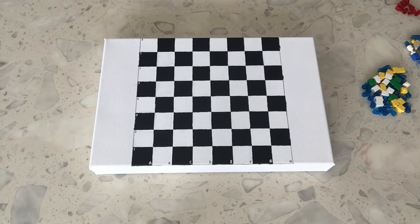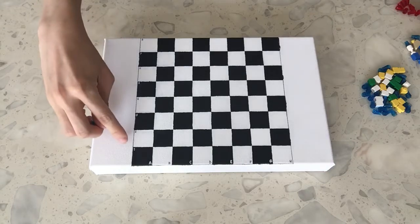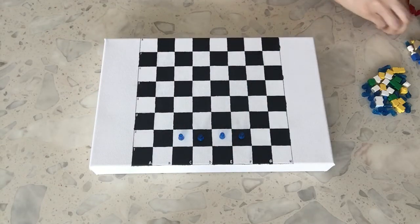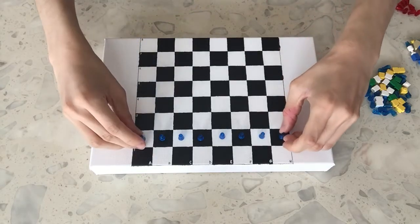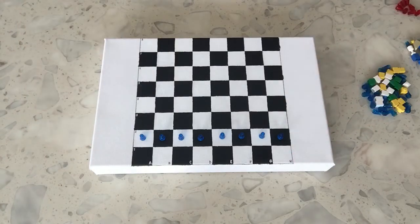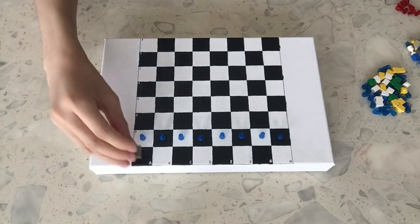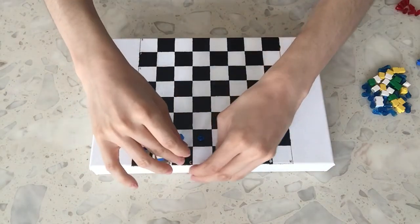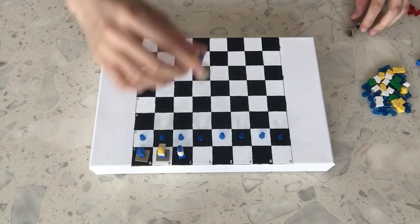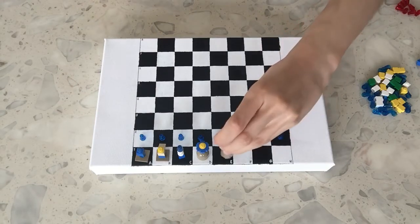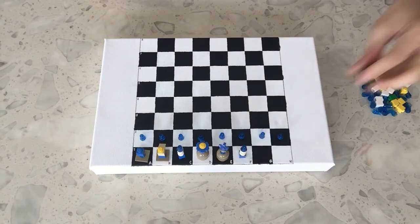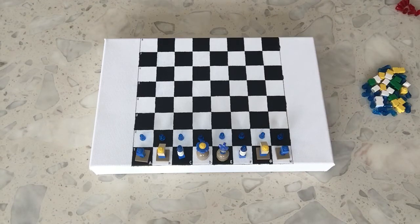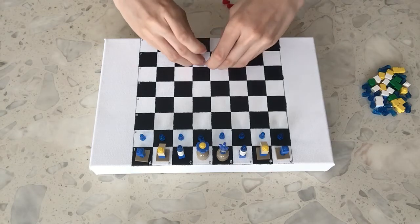The first row in front are filled with eight pawns. The second row in the back are other pieces arranged going from left to right: rook, knight, bishop, queen, king, bishop, knight, and rook.